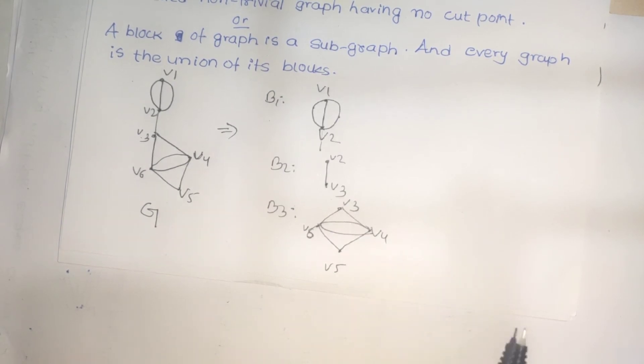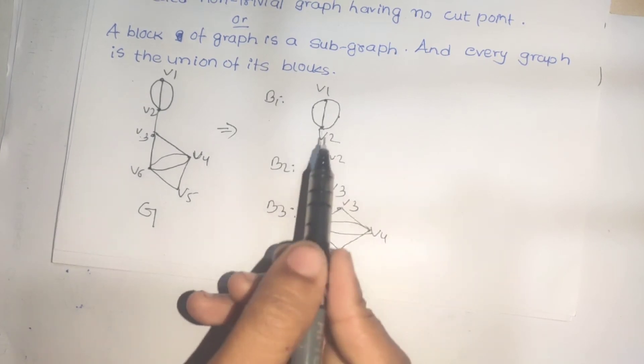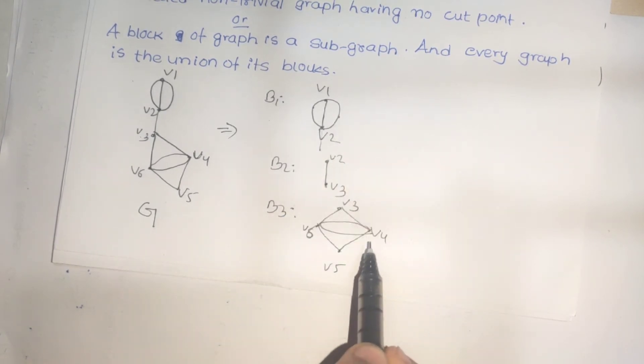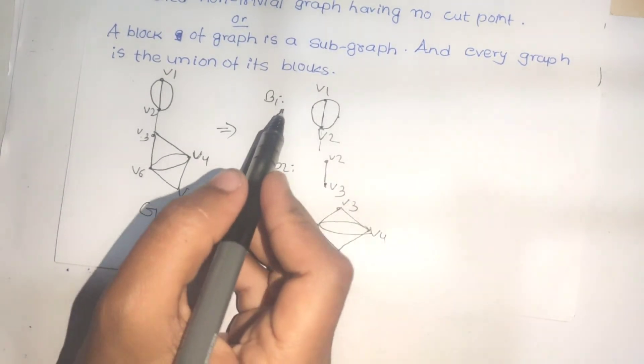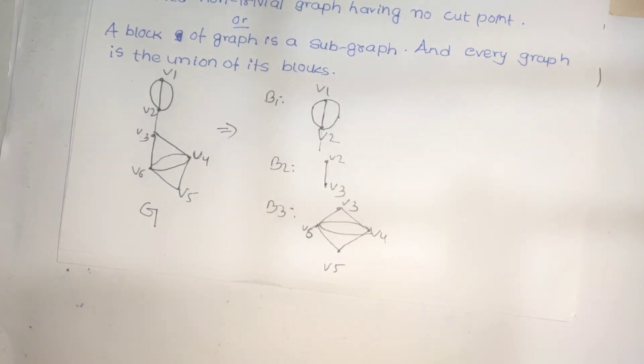There are cut vertices and cut edges in the graph. The blocks have no cut point, but vertices can be repeated between blocks. The union of these blocks forms the given graph.